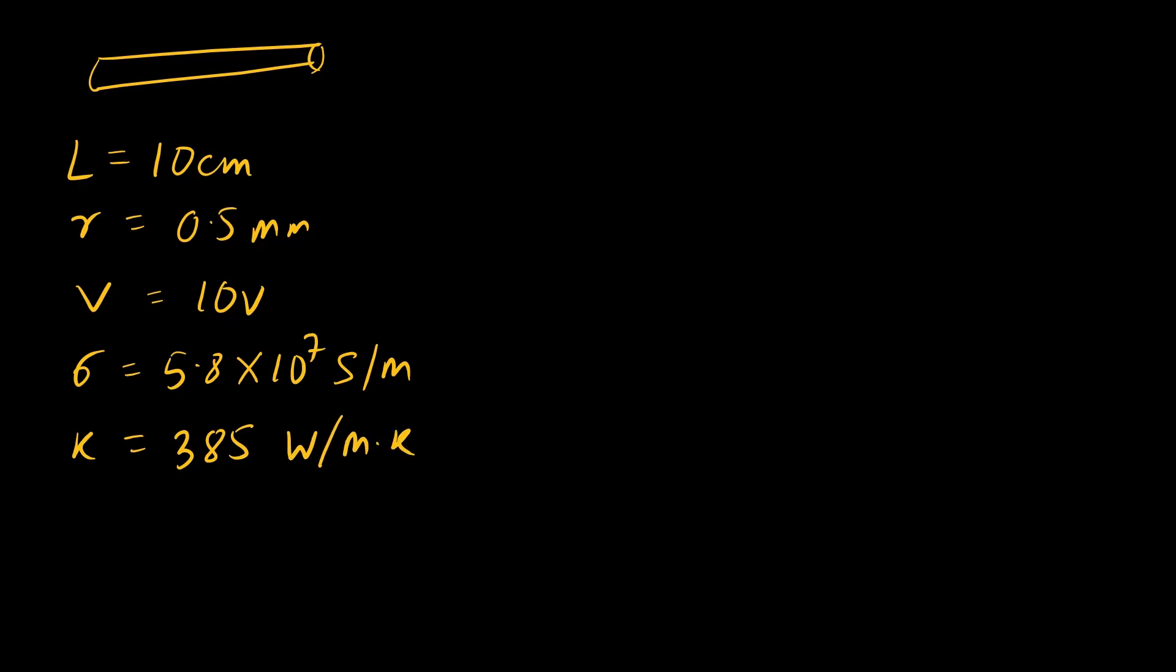Let's take the length L = 10 cm, radius r = 0.5 mm, and the potential drop V = 10 V. The electrical conductivity σ = 5.8×10⁷ S/m, thermal conductivity k = 385 W/(m·K), specific heat Cp = 385 J/(kg·K), and the density of copper ρ = 8960 kg/m³.